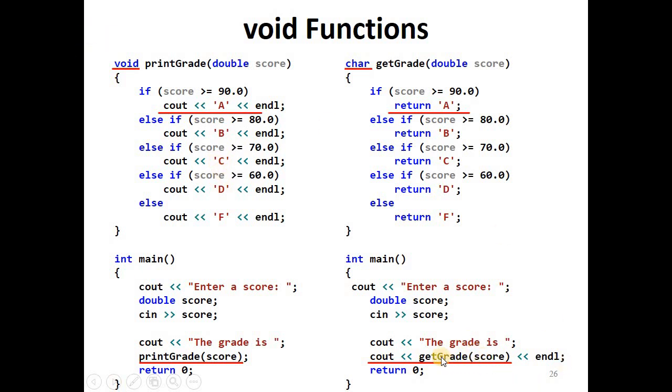The second function also passes score to get grade, but get grade returns a character. If the score is above or equal 90, it returns A, the character A, else if the score larger than or equal 80, it returns B and so on. This function, because it gets a value, the return character is sent to the standard output.